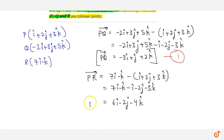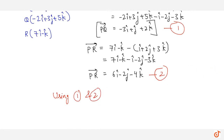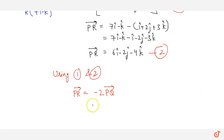This gives equation one and equation two. Looking at PQ and PR, if I multiply PQ by minus two, I get PR. Multiplying by minus two gives the same result as PR — so PR equals minus two times PQ. This means the two vectors are parallel, because I can convert one vector into the other simply by multiplying by a constant.